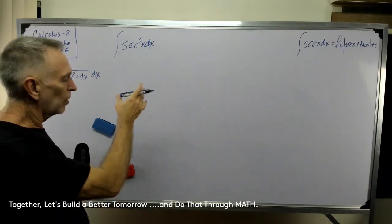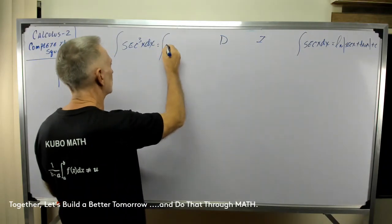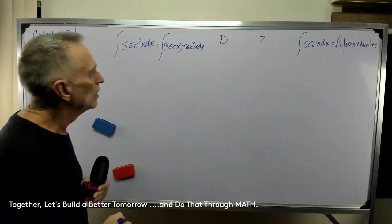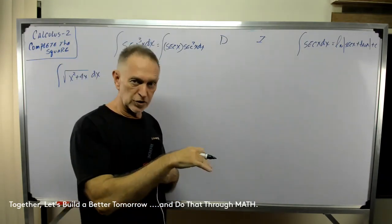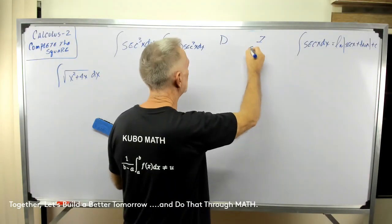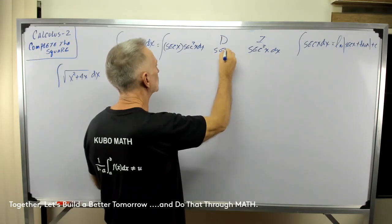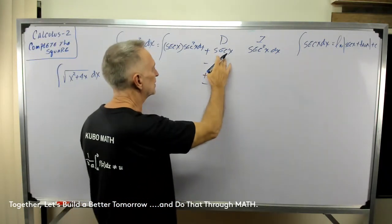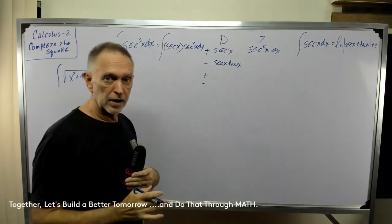Well, let's break this apart and use the DI method. This is the same as the integral of secant x times secant squared x dx. Can I take the integral of secant squared x? Well, the derivative of tangent was secant squared, so the integral of secant squared would be tangent — so I can do that. I'm going to put secant squared x dx here, which leads me to take the derivative of secant x. We've got positive, negative, positive, negative and so on. The derivative of secant x is secant x tangent x, and the integral of secant squared x is tangent x.